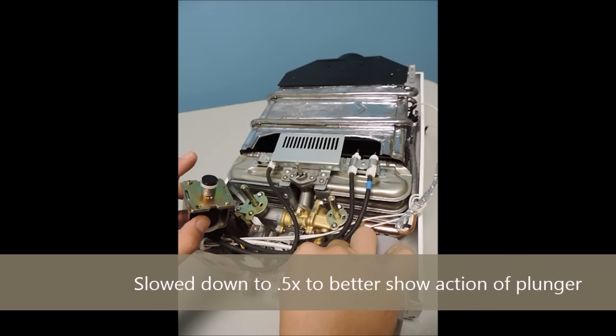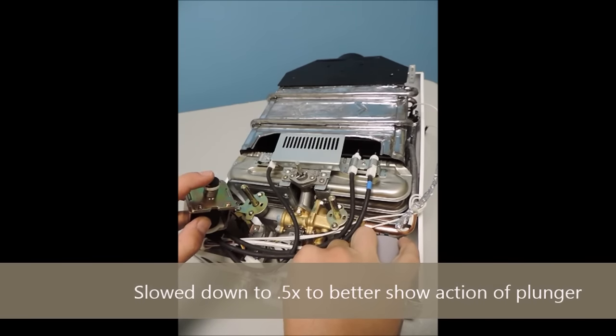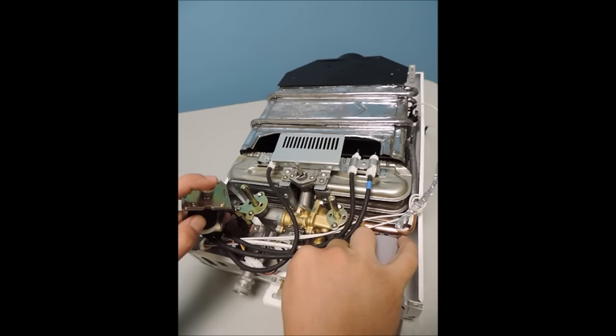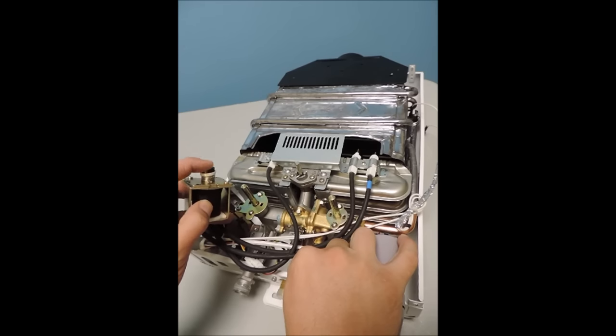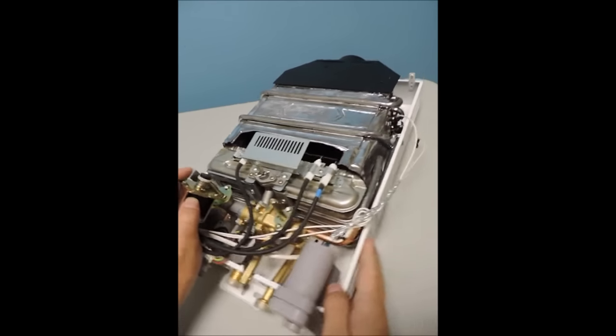Here is an example of a malfunctioning gas solenoid. The solenoid plunger should stay in the open position for roughly 15 seconds. As you can see here, it is immediately resetting to the closed position.